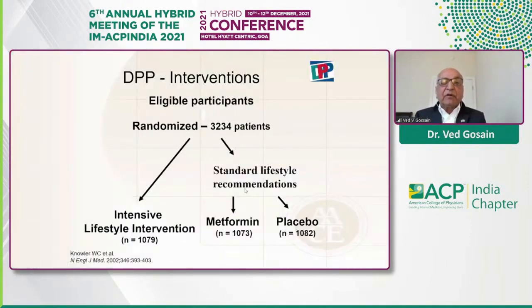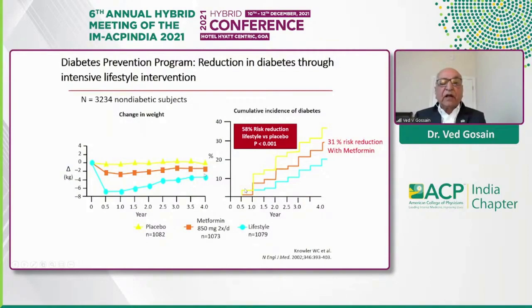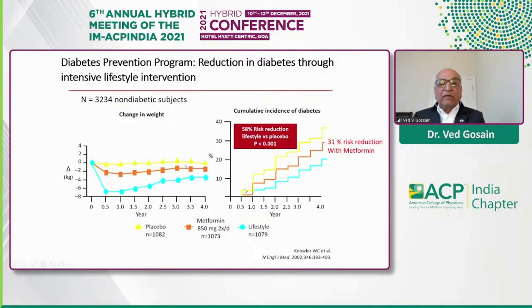The Diabetes Prevention Program involved approximately 3,000 patients randomized to lifestyle intervention — basically 150 minutes of exercise per week — metformin 850 mg twice a day, or placebo. After nearly four years of follow-up, patients assigned to lifestyle intervention lost approximately 7% of their body weight, with a 58% risk reduction in progression of prediabetes to diabetes. With metformin, there was a 31% risk reduction. Both were effective, but lifestyle was clearly more effective.